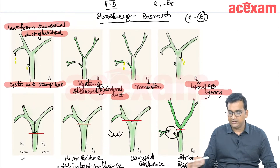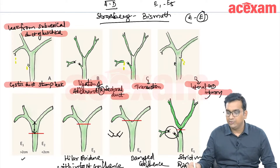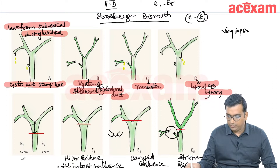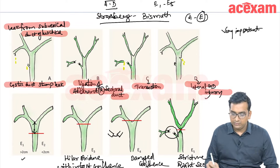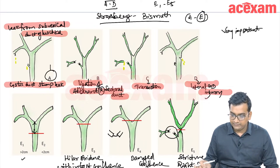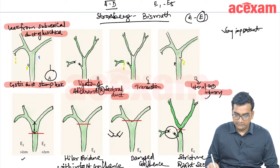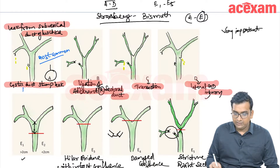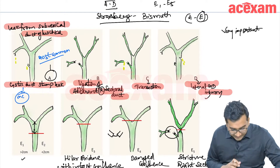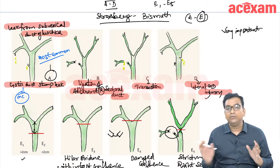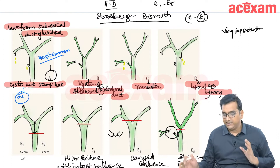Many questions are asked on this classification and this table is very important. Out of all these types, type A is the most common, and out of type A, cystic duct stump leak is the most common one. The next important topic is how to manage biliary injury.